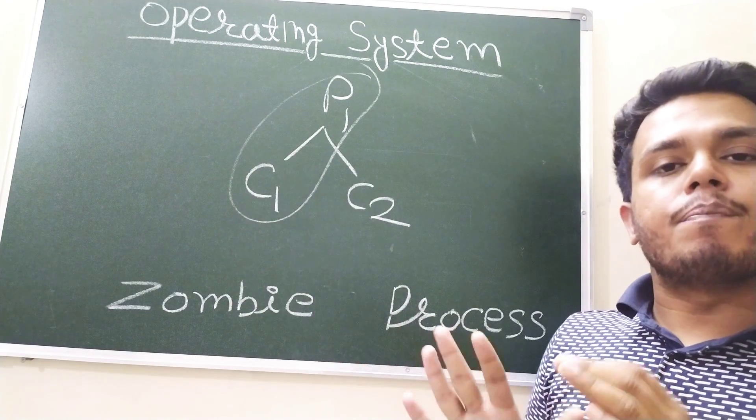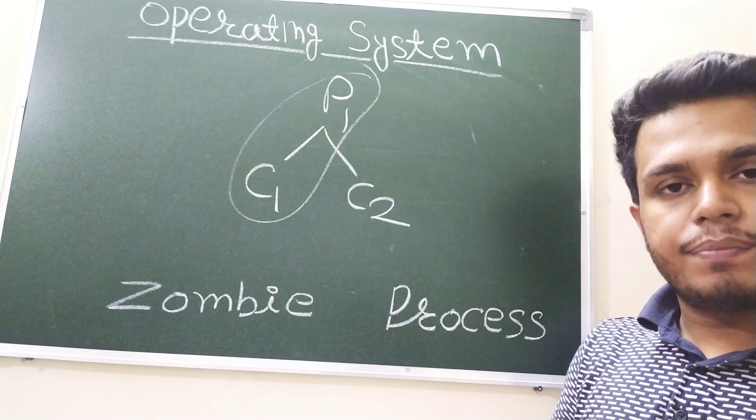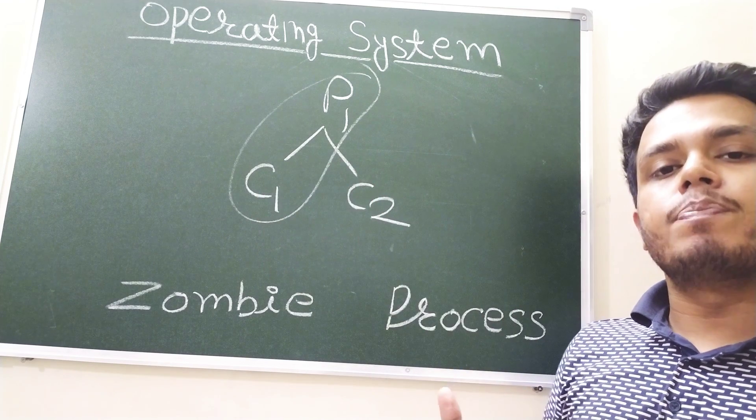In this case, C1 has completed its execution. Once the child process completed execution,